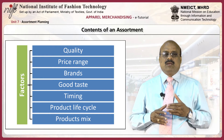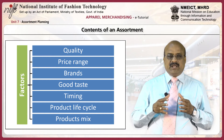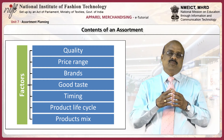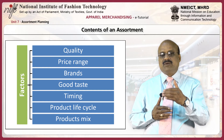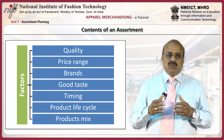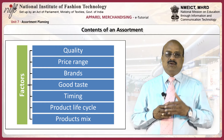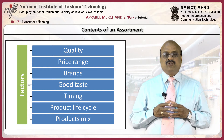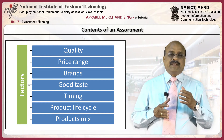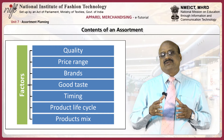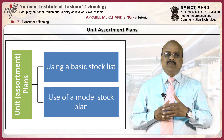Since no one retail store can carry all products available in the marketplace, decisions about which merchandise assortment to carry are not left to chance, but are based on a number of important factors. These include the type of retail institution, past sales records, determination of consumer wants, internal and external sources of information, type of goods offered, and elimination of merchandise items.